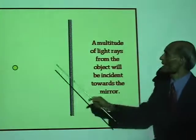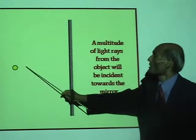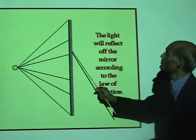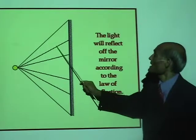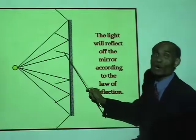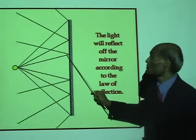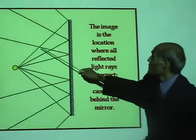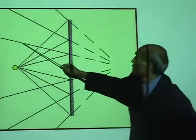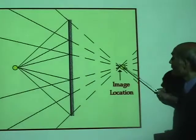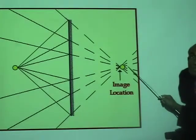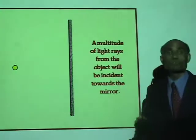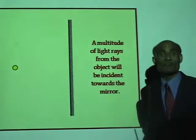Just one more time: any number of incident rays get reflected according to the laws of reflection, and all these reflected rays will now appear to be coming from here. And that is the position of the image.